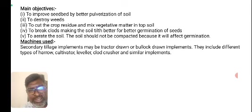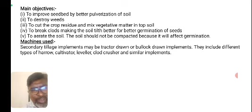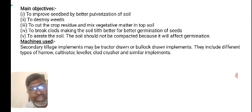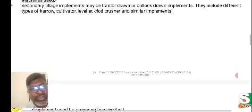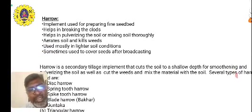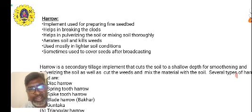The various machines used for secondary tillage operations may be tractor-drawn or puller-drawn implements. They include different types of harrows, cultivators, levelers, clod crushers, and similar implements. Harrow is the main implement used for secondary tillage operations.